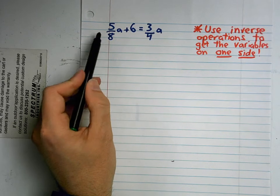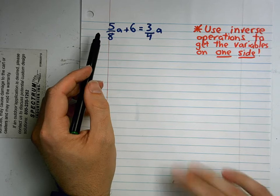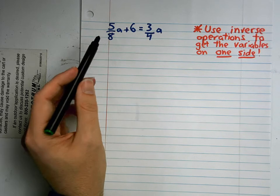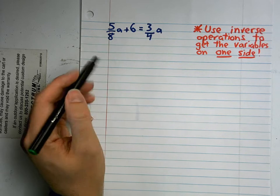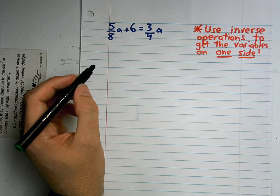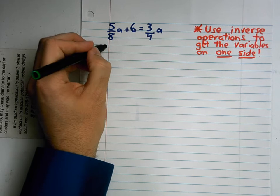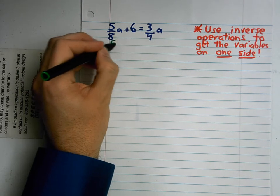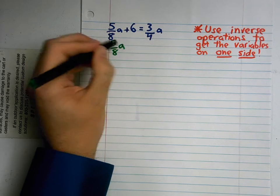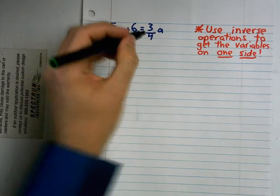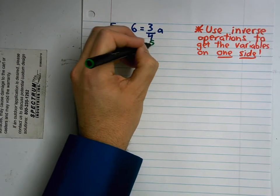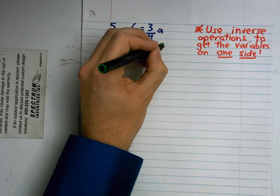This 5/8, it's a positive number, it's not a negative 5/8 times a, it's a positive 5/8 times a, so I'm going to use my inverse operation which is subtracting. I'm going to subtract 5/8 a, because I'm doing the inverse operation. And over here, I'm going to subtract 5/8 a.